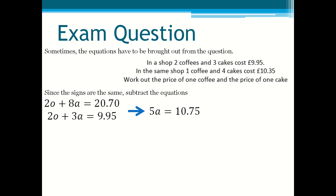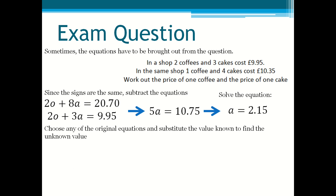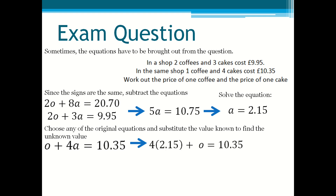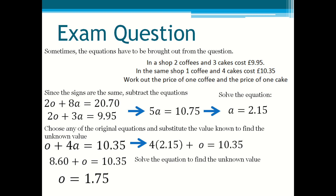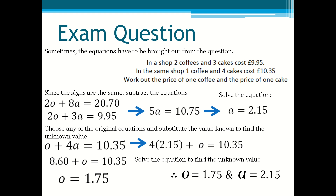You divide both sides by 5 to find out how much one cake costs, and one cake costs £2.15. Then you choose any of the original equations and substitute the value of A to find how much one coffee is worth. I chose O + 4A = £10.35, then substitute 2.15 into the place of A: 4 times 2.15 plus O = £10.35. So O = £1.75. Therefore O = £1.75 and A = £2.15 — one coffee is £1.75 and one cake is £2.15.